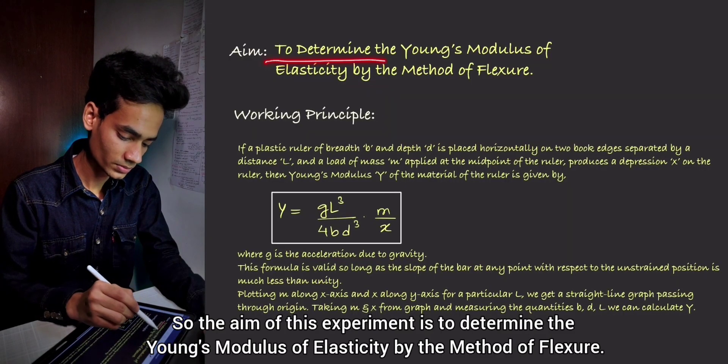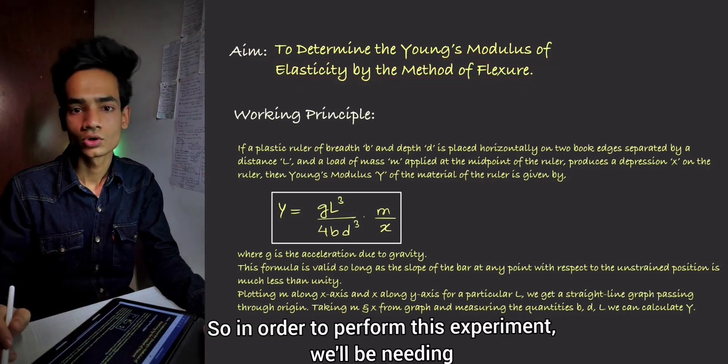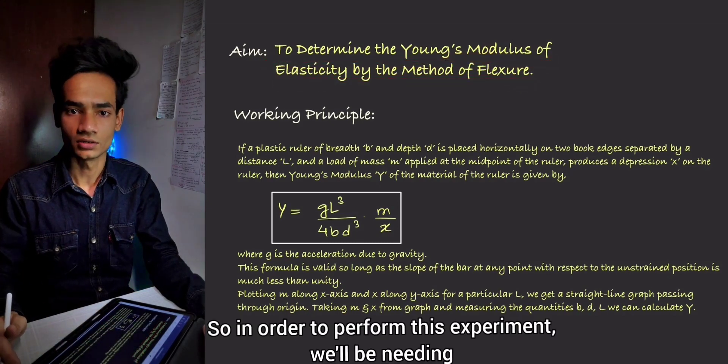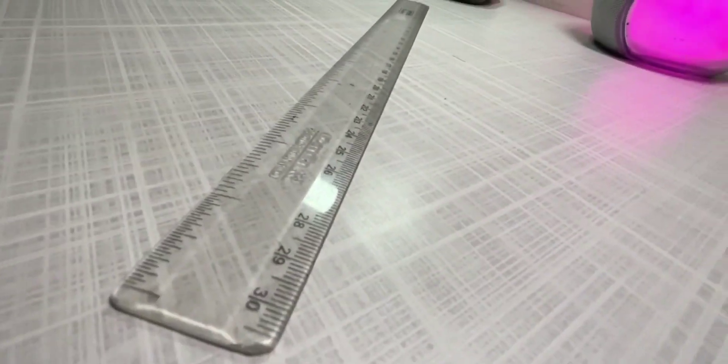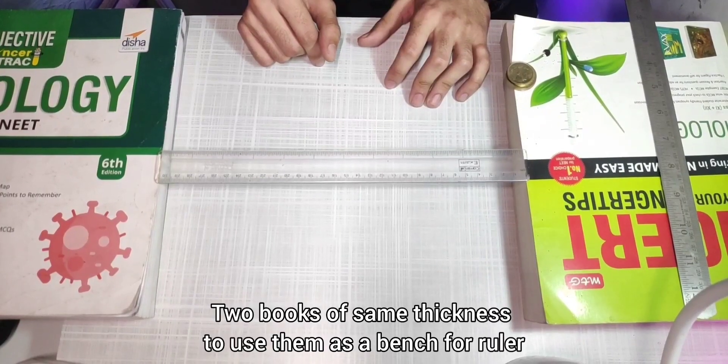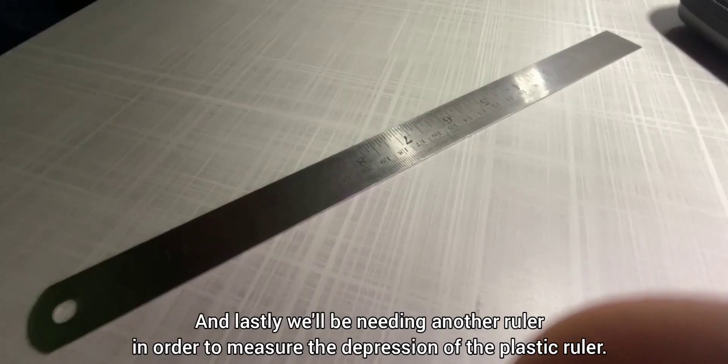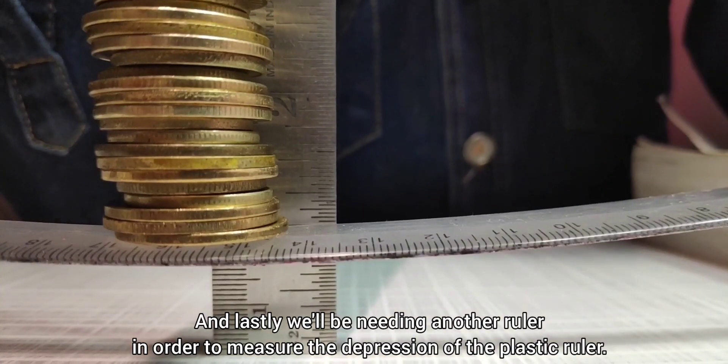So the aim of this experiment is to determine the Young's modulus of elasticity by the method of flexure. So in order to perform this experiment, we'll be needing a plastic ruler, some coins to be used as weight, two books of same thickness to use them as a bench for ruler, and lastly we'll be needing another ruler in order to measure the depression of the plastic ruler.